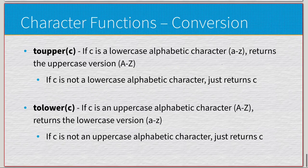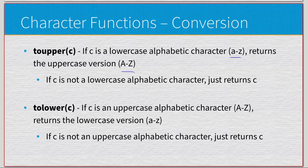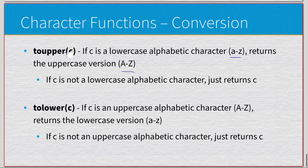Finally, toupper and tolower are not checking but transforming a character. toupper: if the character is a lowercase alphabetic character (a–z), it returns the uppercase version; if not, it just returns the character unchanged — no wasted operations. This is essentially a built-in function for what we already covered using ASCII value manipulation. tolower does the exact same thing in reverse: converts an uppercase character to lowercase; if it's not uppercase it just returns the character as-is.